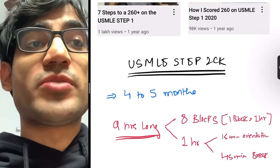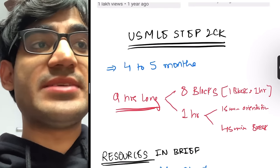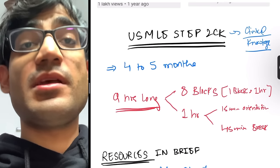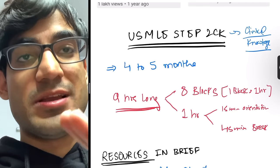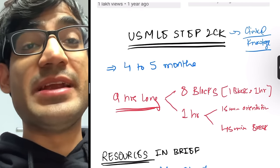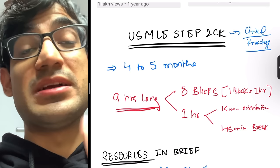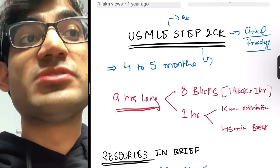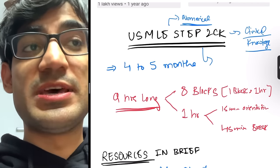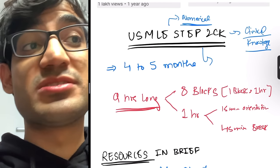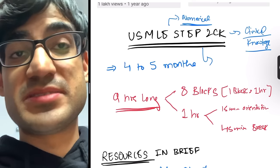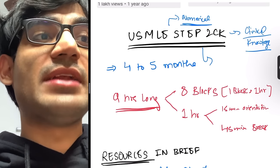USMLE Step 2 CK tests your clinical knowledge — how you apply your basic clinical knowledge of medicine, OBGYN, pediatrics, surgery. It also includes some Step 1 material like biochemistry. Since Step 2 CK will remain a numerical three-digit score, program directors will use it to screen applicants. Step 2 CK is nine hours long with eight one-hour blocks of 40 questions each, totaling 318 to 320 questions.